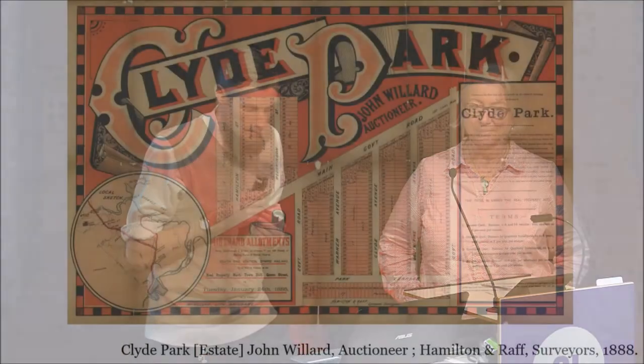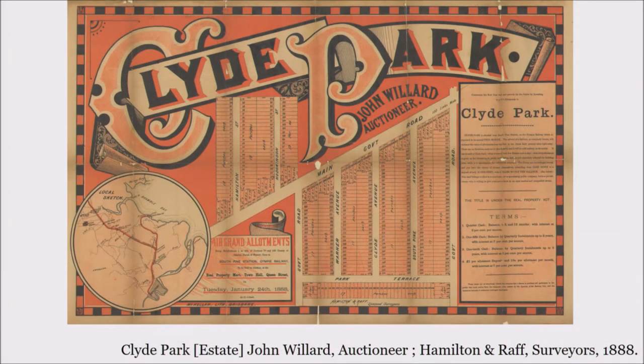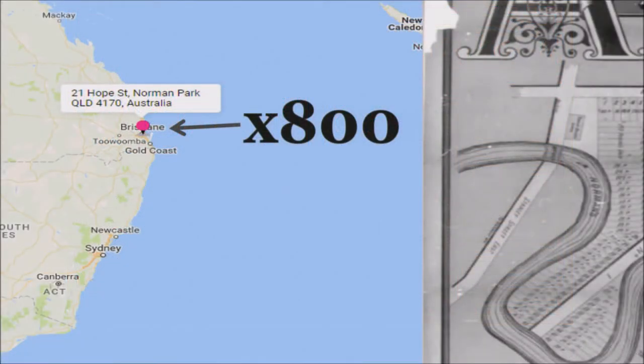Real estate maps are advertisements for land subdivisions. They can be really useful for researching things like house histories, local history, land development, and town planning. They're incredibly pretty too — graphic design, typography, that type of thing.